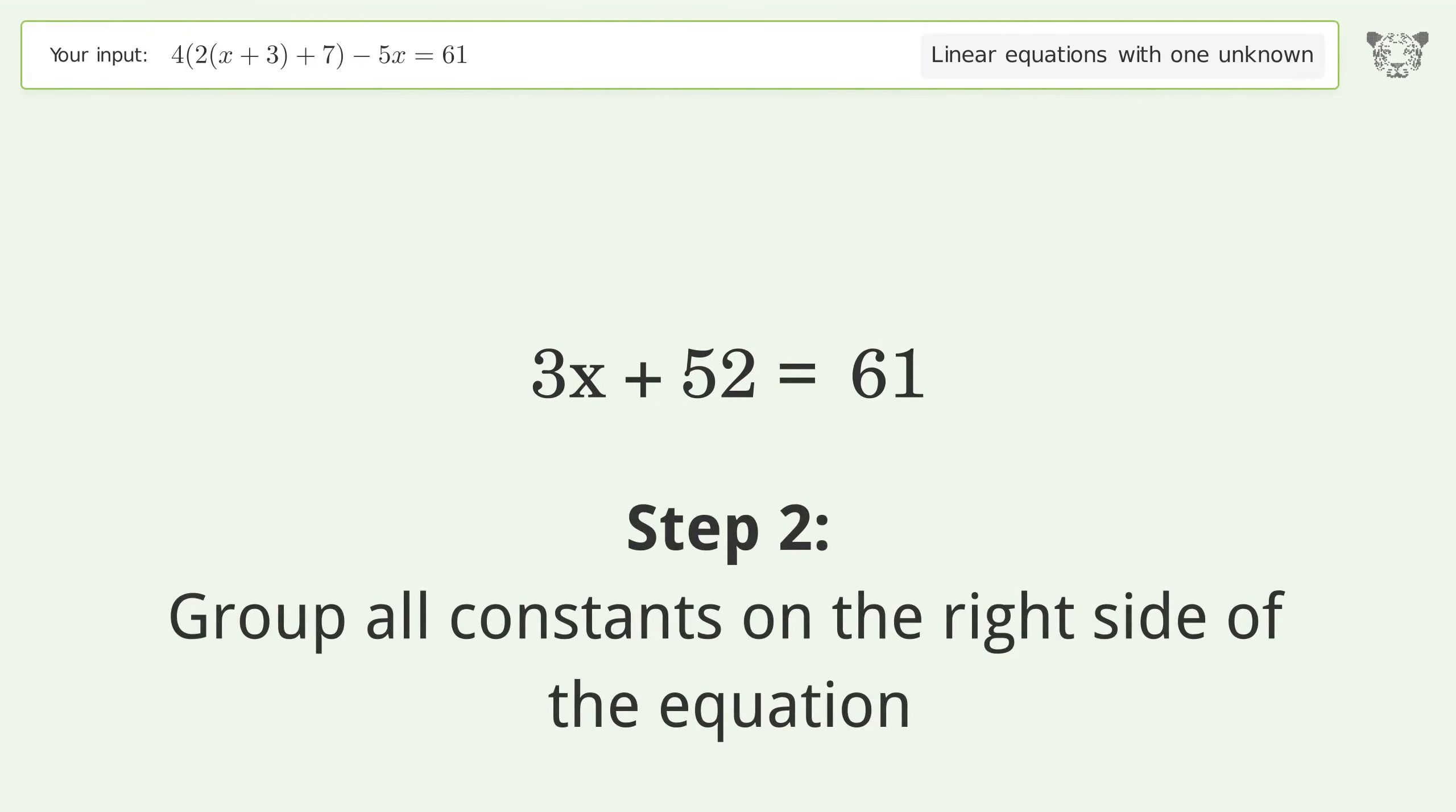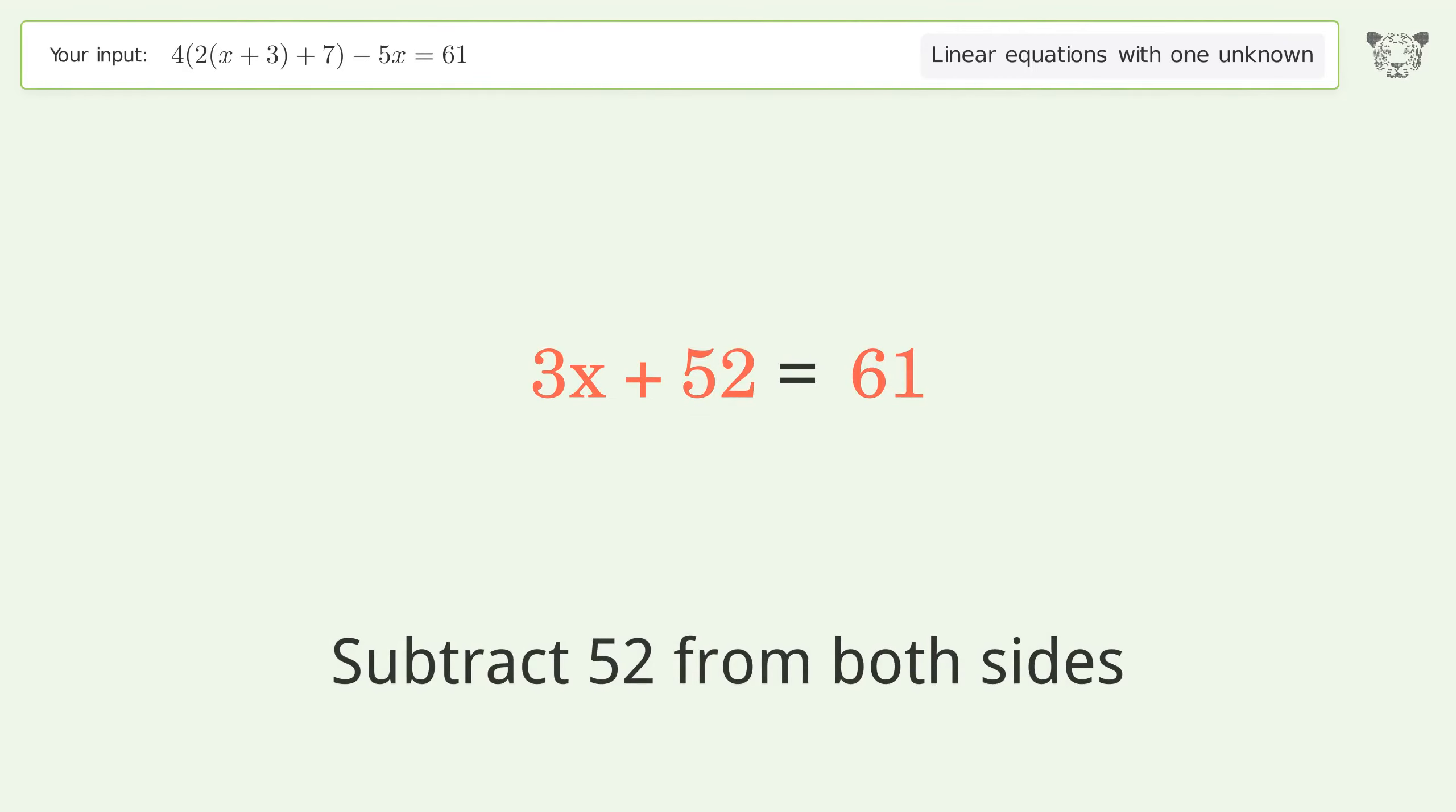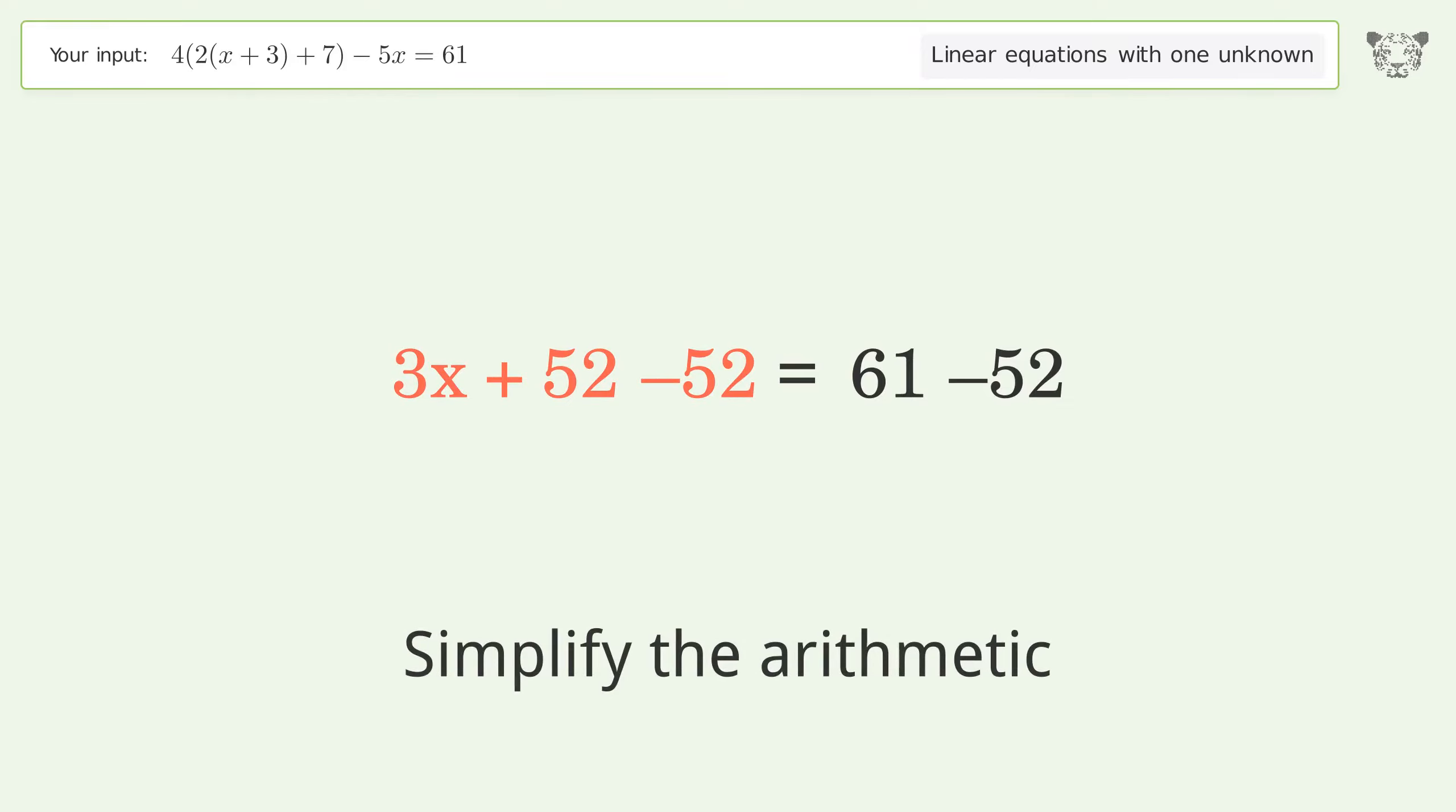Group all constants on the right side of the equation. Subtract 52 from both sides. Simplify the arithmetic.